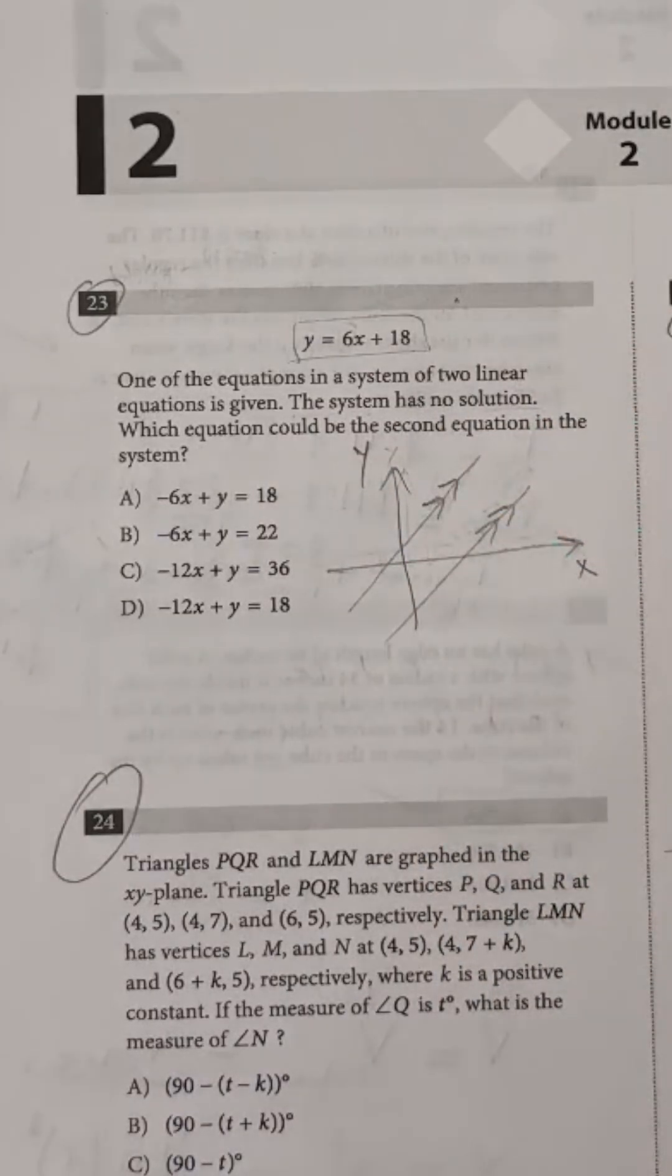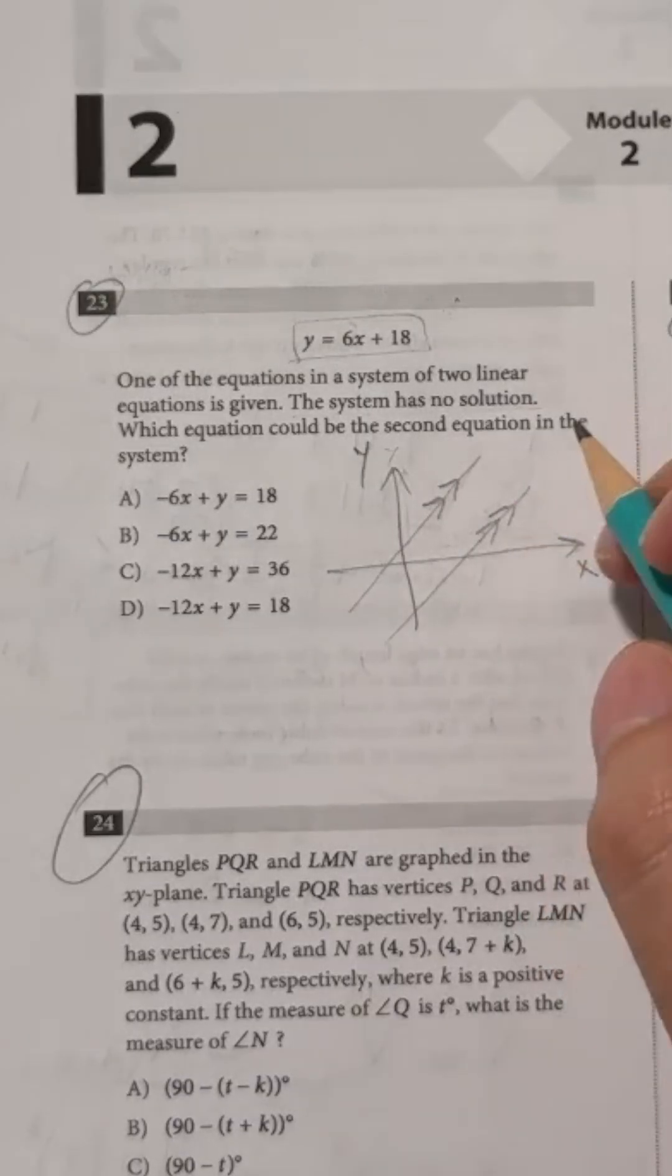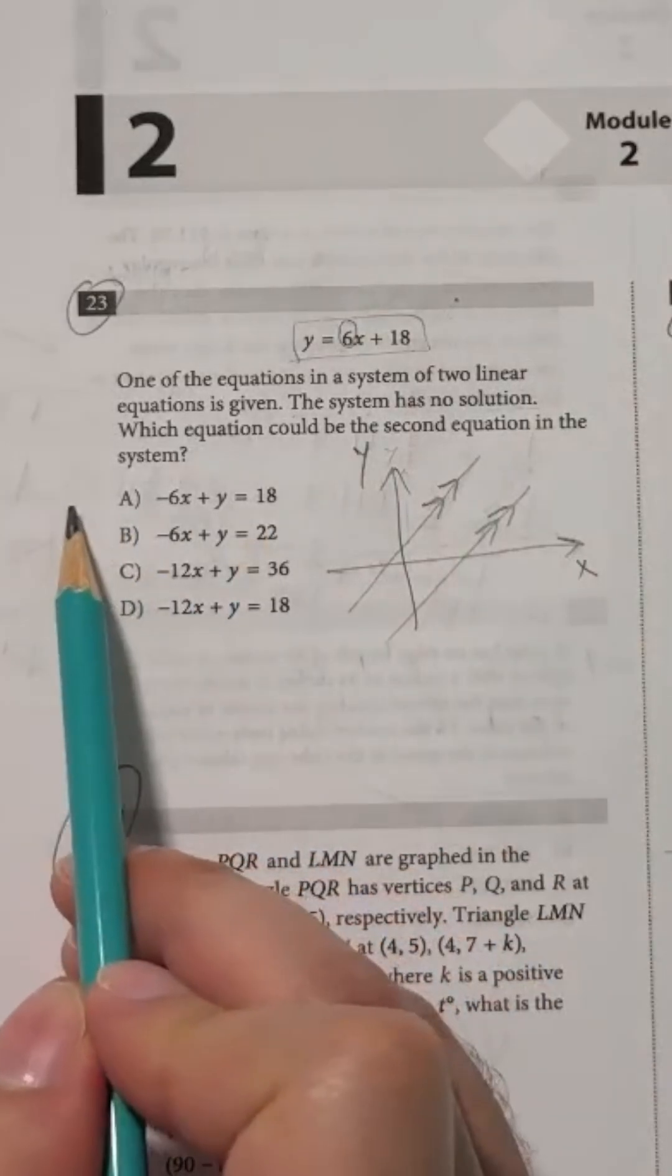For two lines to be parallel, they must have the same slope, which in this case is 6, as you can see from the coefficient of x in the given equation above.